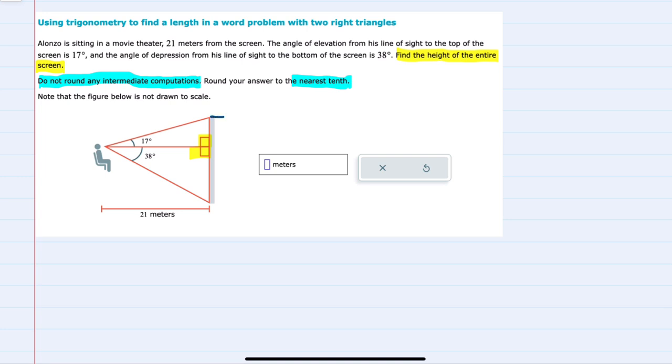To find the height of this screen working with these triangles, if I call this height h1 and the bottom height h2, then our total height will just be the sum of those, h1 plus h2.